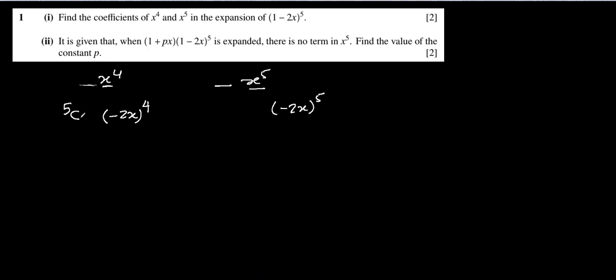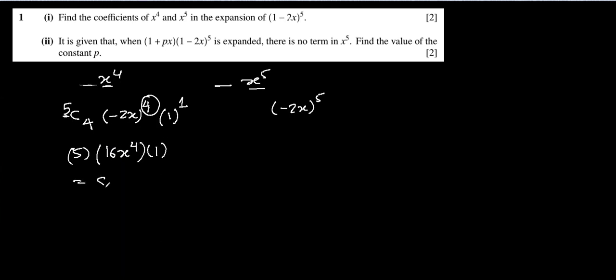We don't have x inside the bracket, we have minus 2x. So we write minus 2x to the power 4 and minus 2x to the power 5, and now we complete each term using nCr. n is the highest exponent which is 5, so 5C4, multiplied by minus 2x to the power 4, and 1 to the power 1. So 5C4 times positive 16x⁴ times 1 gives 80x⁴. The coefficient of x to the power 4 is 80.